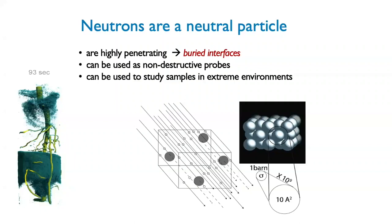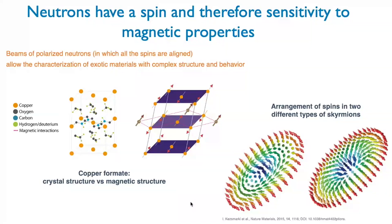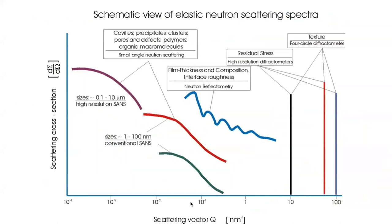Neutrons are non-destructive, so we can use biological material and put it in the beam for hours or days. This also allows us to use extreme sample environments. In terms of imaging, it's very interesting — for example, we were able to see the movement of water into plant roots, demonstrating the possibility to detect light elements. Finally, a neutron has spin and therefore sensitivity to magnetic properties, making them widely used for looking at magnetic systems, both structure and excitations.